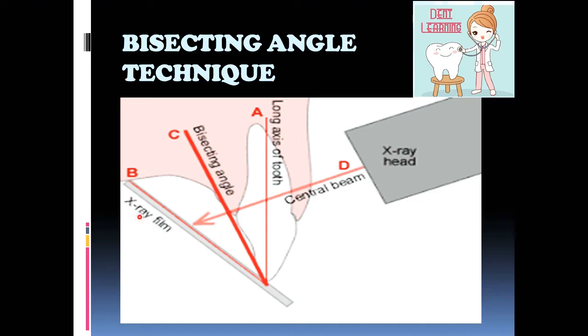The plane of the receptor here, and the long axis of the tooth, forms an angle with its apex at the incisal or the occlusal surfaces. Here it is—it forms an angle. Now, considering an imaginary line which is bisecting this angle—this is the bisecting angle line, an imaginary line.